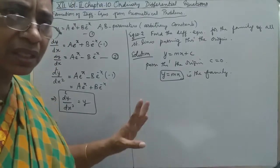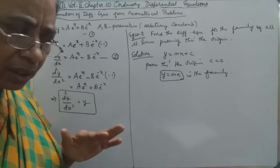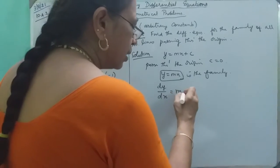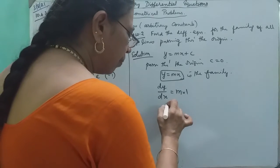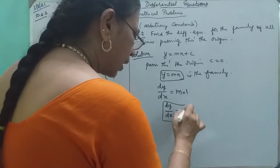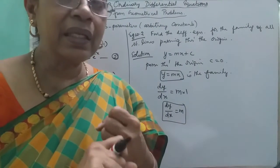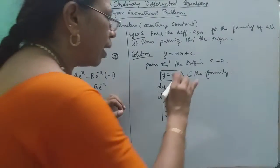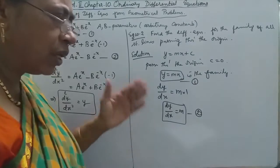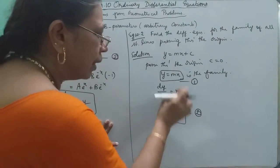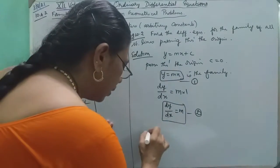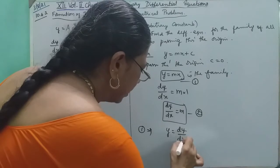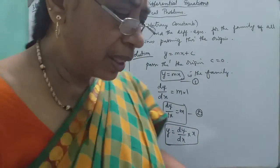Now, m is the arbitrary constant. We have to differentiate y = mx with respect to x, giving dy/dx = m. Since m is constant, m × dx/dx = 1. We eliminate m by substituting back: m = y/x. Therefore, dy/dx = y/x. This is our differential equation.